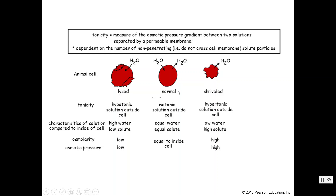Sometimes the extracellular fluid becomes hypotonic — there is less solute outside the cell and more inside. Water always moves toward higher solute concentration, so water moves into the cell. This causes net water movement into the cell, and if it's too much, cells can lyse — essentially blow up — and cells don't work well in that condition.